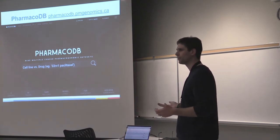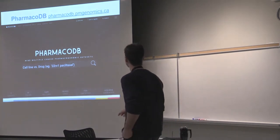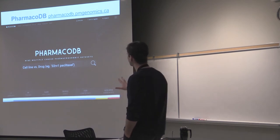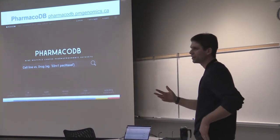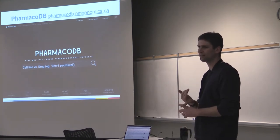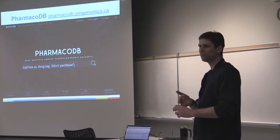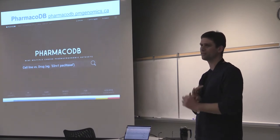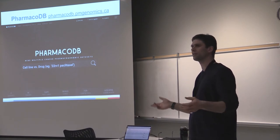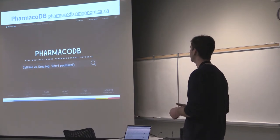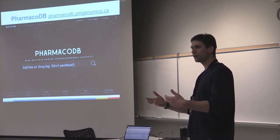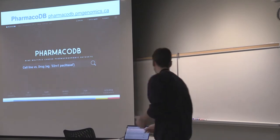You can enter several types of information: a cell line name to see what drugs have been tested on it, a drug name to see how many cell lines have been tested, a tissue type to get all cell lines tested with drugs. You can specify a cell line name and a drug name, and it will give you the drug dose-response curve.